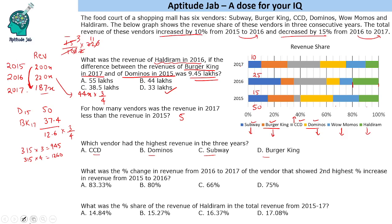For Subway, the percentage shares across the three years sum to 50. For Burger King: 20, 10, and 20 — also totalling 50. For CCD: 15 plus 25 plus 25 and 5 — giving 55. For the fourth vendor (Domino's): 20%, 10%, and 25% — also totalling 55. So Subway and Burger King are at 50, and CCD and Domino's are at 55, making them more likely candidates for the highest total revenue.